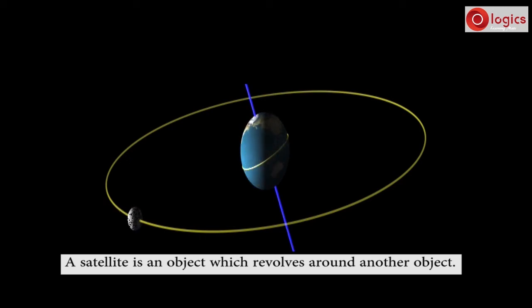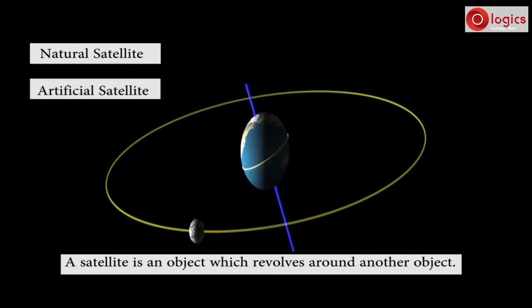There are two types, one is natural satellite and other one is artificial satellite.